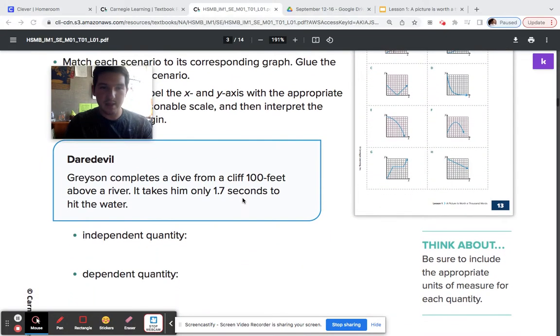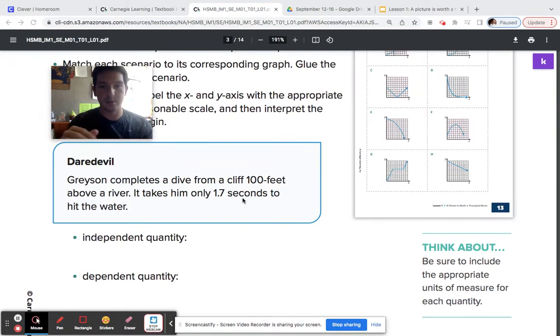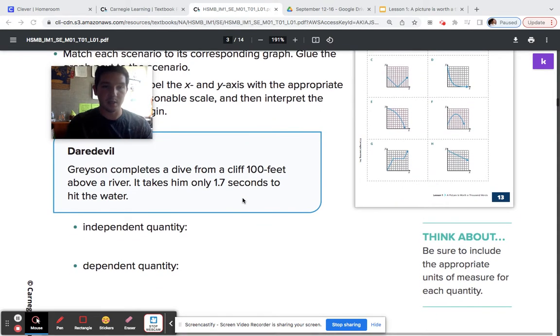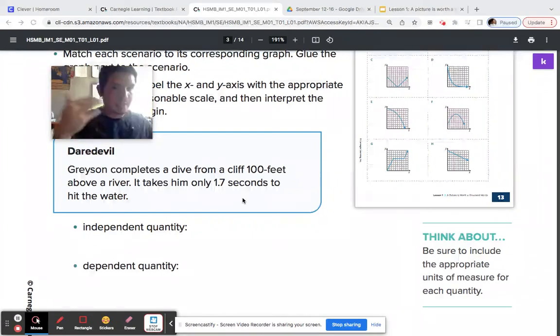So we just determined that E is going to match our scenario if Grayson completes a dive from a cliff 100 feet above the river. It takes him only 1.7 seconds to hit the water. Now, if we're thinking about independent quantity here, Grayson's going up this mountain. He's standing on a cliff that's 100 feet above the river.